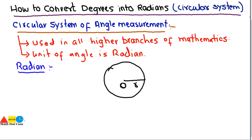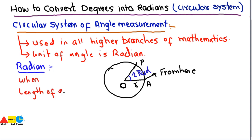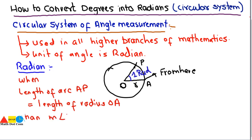Starting from point A on the circle, if I mark an arc on the boundary of the circle — here at point P — such that the length of arc AP is equal to the radius of the circle OA, and then join O to P, the angle formed at the center is one radian. So when the length of arc AP equals the radius OA, the angle AOP equals one radian.